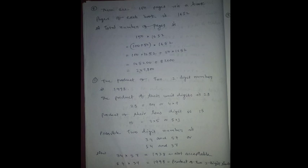1998 is the product of two 2-digit numbers. The product of their units digits is 28, so 28 is 7 into 4 or 4 into 7. 14 into 2 is not possible because 14 is already a 2-digit number. So 1 digit is possible for 4 into 7 or 7 into 4.